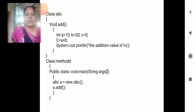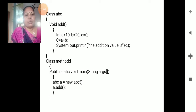So here: class, class name is ABC, the method name is void add. Here, creating the variable declaration: int a is equals to 10, b is equals to 20, c is equals to 0.